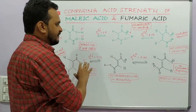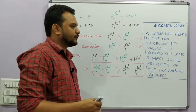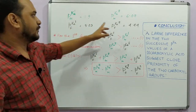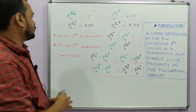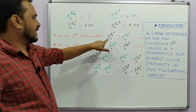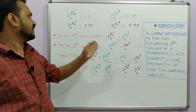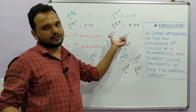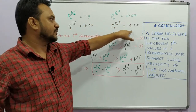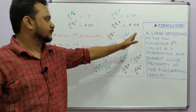From these two pKa comparisons we can draw a beautiful conclusion. We established: pKa₁(fumaric) > pKa₁(maleic) ... (1), and pKa₂(maleic) > pKa₂(fumaric) ... (2). Adding both inequalities: pKa₁(fumaric) + pKa₂(maleic) > pKa₁(maleic) + pKa₂(fumaric). Rearranging: pKa₂(maleic) − pKa₁(maleic) > pKa₂(fumaric) − pKa₁(fumaric). For any dicarboxylic acid, pKa₂ is always greater than pKa₁, so these differences are both positive.